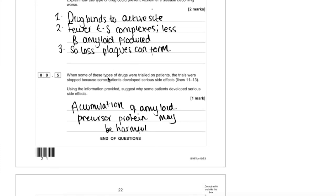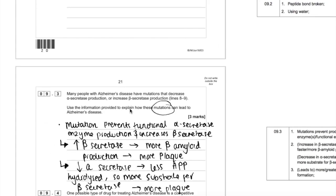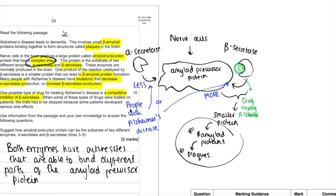Then the final part. When some of these types of drugs were trialled on patients, the trials were stopped because they developed serious side effects. Use the info provided to suggest why some patients developed serious side effects. If we have a look back at our diagram, it's blocking beta secretase.